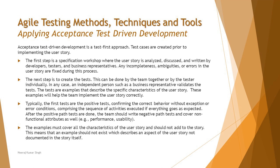The examples must also cover the characteristics of the user story and should not add to the story. This means you try all combinations of inputs, outputs, and scenarios that are included in the story. An example should not exist that describes an aspect of the user story not documented in the story itself — no assumptions and no out-of-scope thinking. Whatever is documented as part of the user story is what you consider.